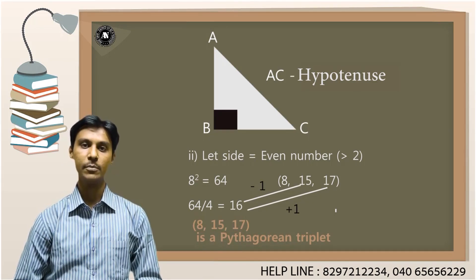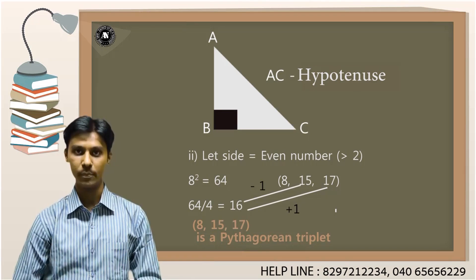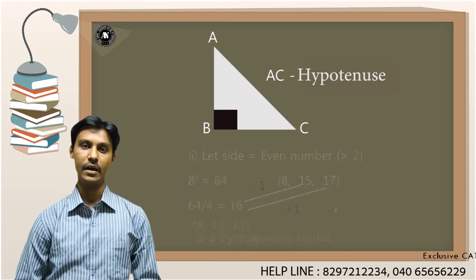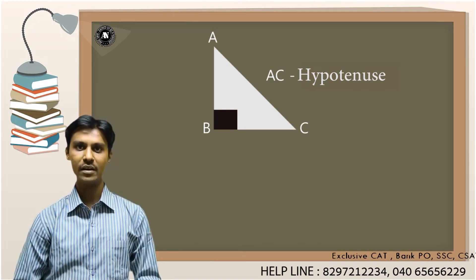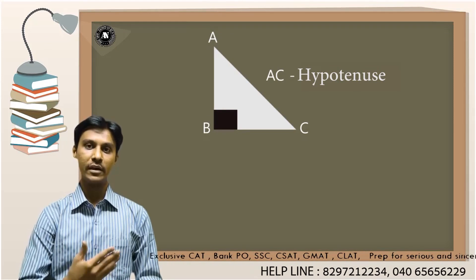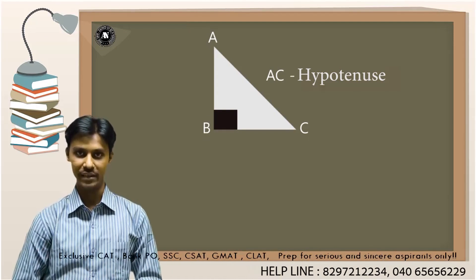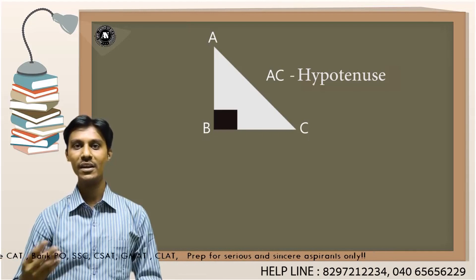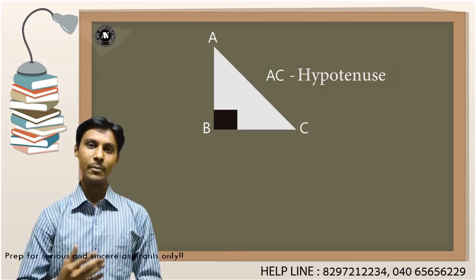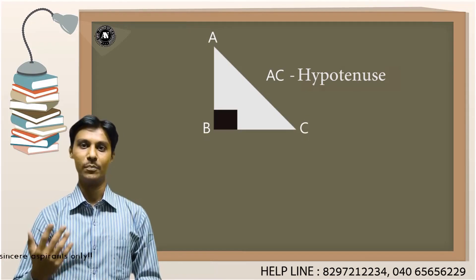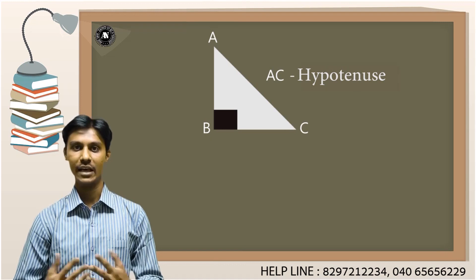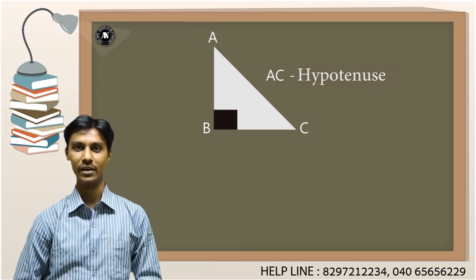Like this, you can keep generating a series of Pythagorean triplets. If a number is odd, you square it, divide by 2, subtract 0.5 and add 0.5 to get the triplet. If a number is even, you square it, divide by 4, subtract 1 and add 1 to get the triplet. In this way, you can generate as many series as possible with respect to Pythagorean triplets.